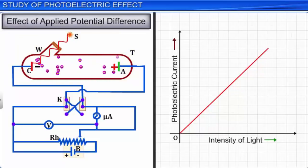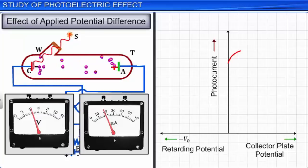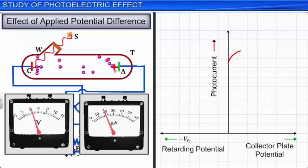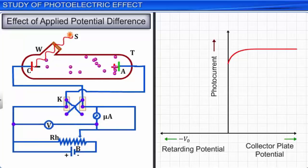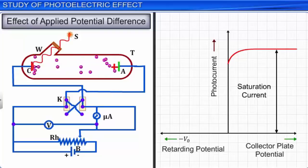Let us now study the effect of the applied potential difference on the photoelectric current. As you gradually increase the accelerating potential across the emitter and collector plates, the current in the microammeter increases, due to an increase in the number of electrons that reach the collector plate per second. As the accelerating potential increases further, the current reaches its maximum and remains constant. This maximum value of the current is called saturation current, and is a consequence of all the photoelectrons emitted by emitter plate C reaching the collector plate A.